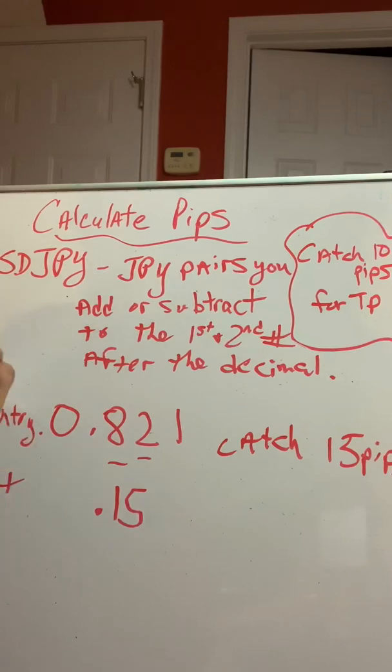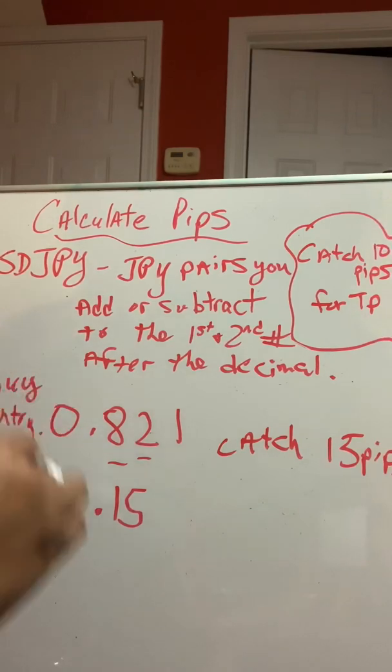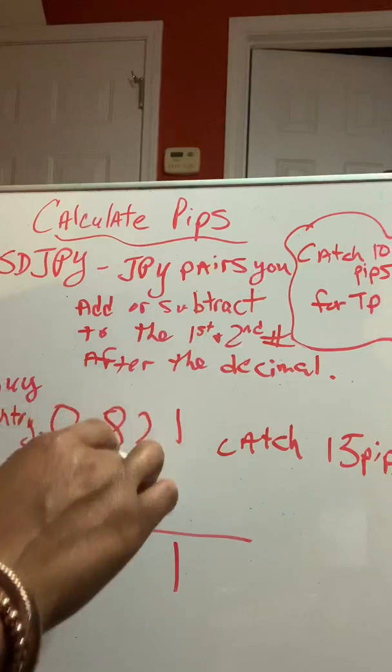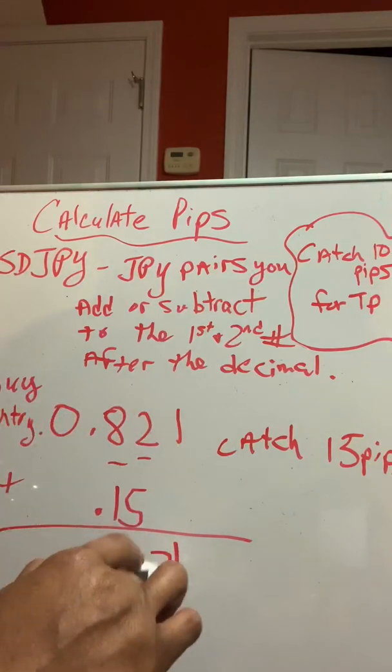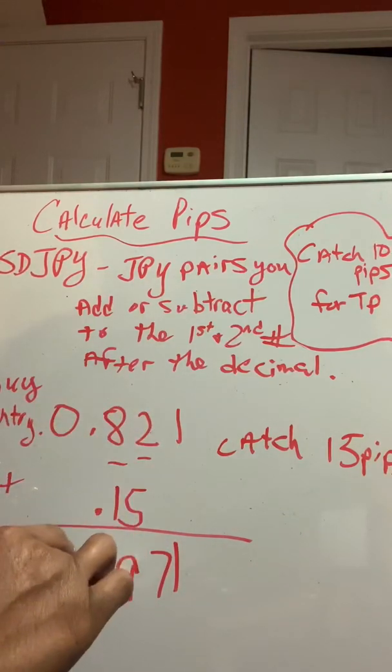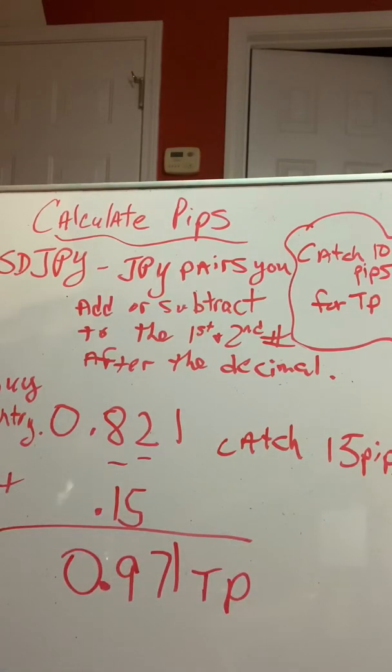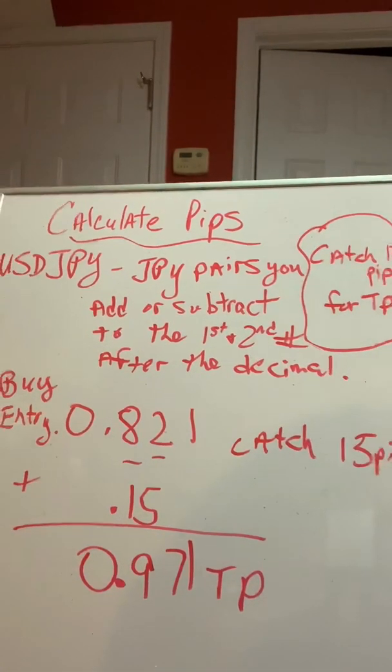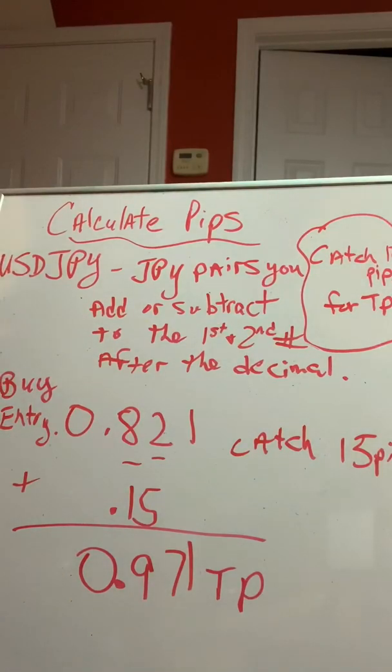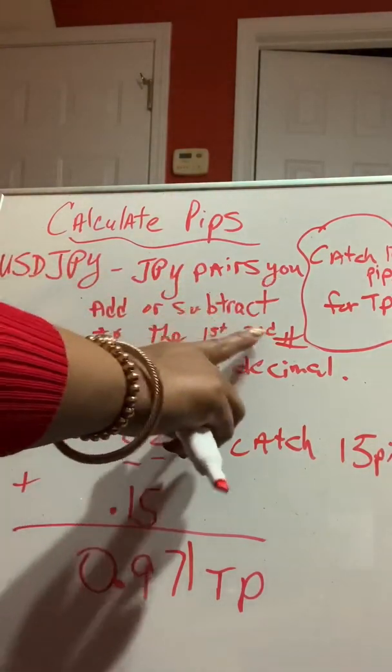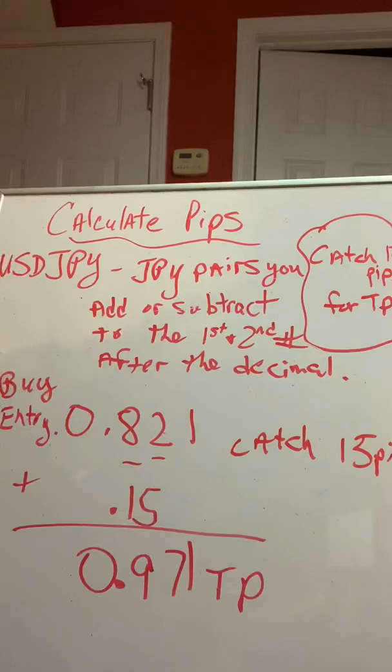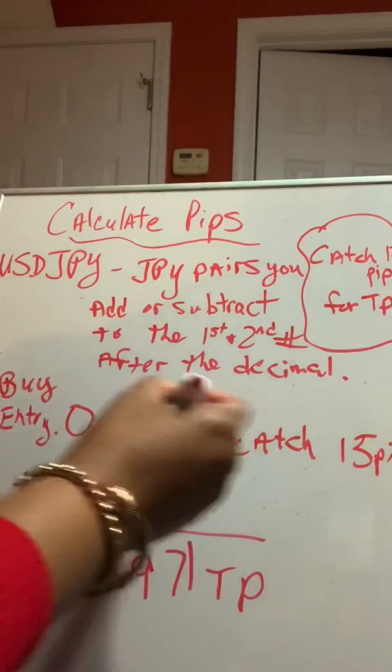If we're on a buy. So, if we're in a buy, we're going to add 15. Bring down our 1. 2 and 5 is 7, 9, 0. That's our TP. Okay? So, when it's a JPY pair, JPY pairs, you add or subtract to the first and second pair. It's first and second number after the decimal.